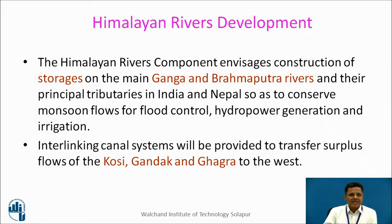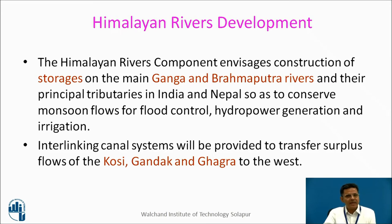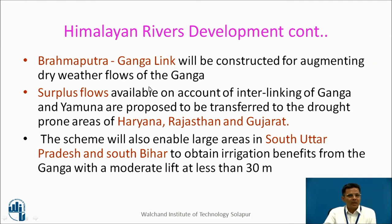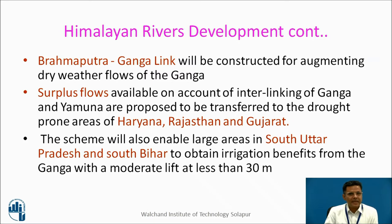The Himalayan River Development Component proposes construction of storages on main Ganga and Brahmaputra rivers and their principal tributaries in India and Nepal, so as to conserve monsoon flows for flood control, hydropower generation, and irrigation. An interlinking canal system will transfer surplus flows of Kosi, Gandak, and Ghagra to the west. A Brahmaputra-Ganga link will augment dry weather flows of Ganga. Surplus flows from interlinking of Ganga and Yamuna are proposed to be transferred to the drought-prone regions of Haryana, Rajasthan, and Gujarat. The scheme will also enable large areas of South Uttar Pradesh and South Bihar to obtain irrigation benefits from the Ganga with a moderate lift of about 30 meters.